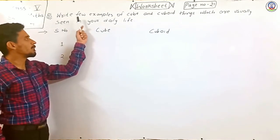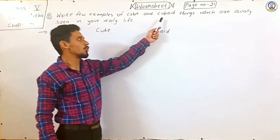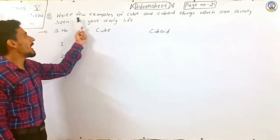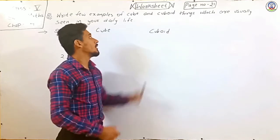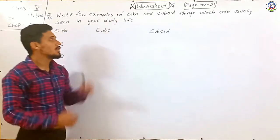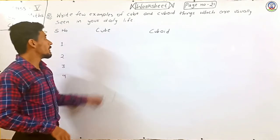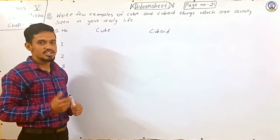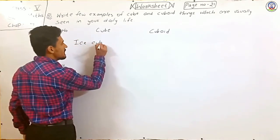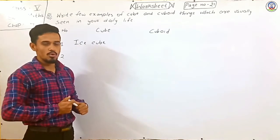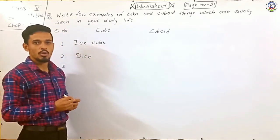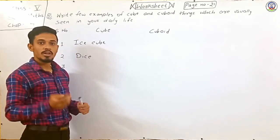So, first question is write few examples of cube and cuboid things which are usually seen in your daily life. So, first of all, we write here ice cube. So, we write here ice cube, which is used in your daily life. Second is dice.